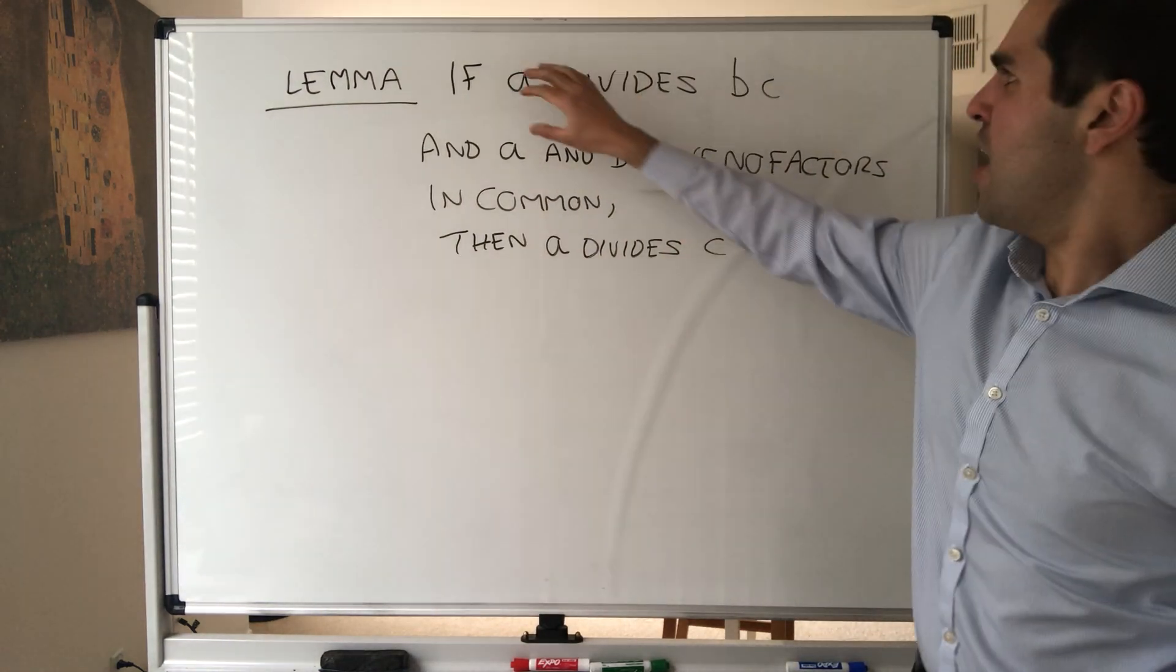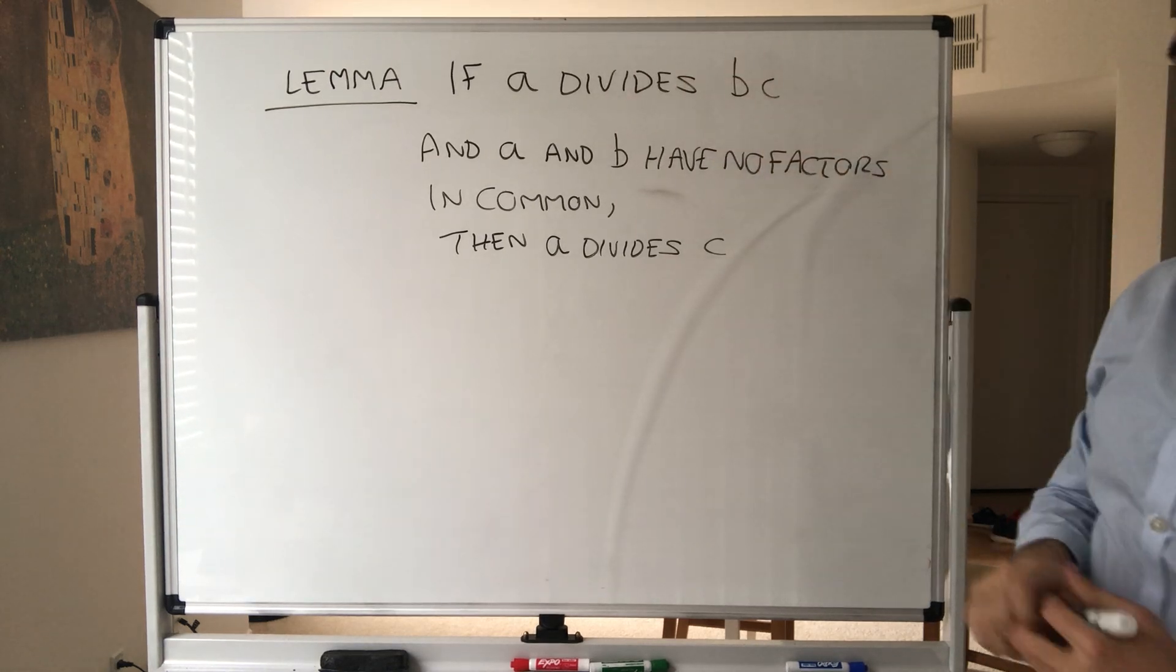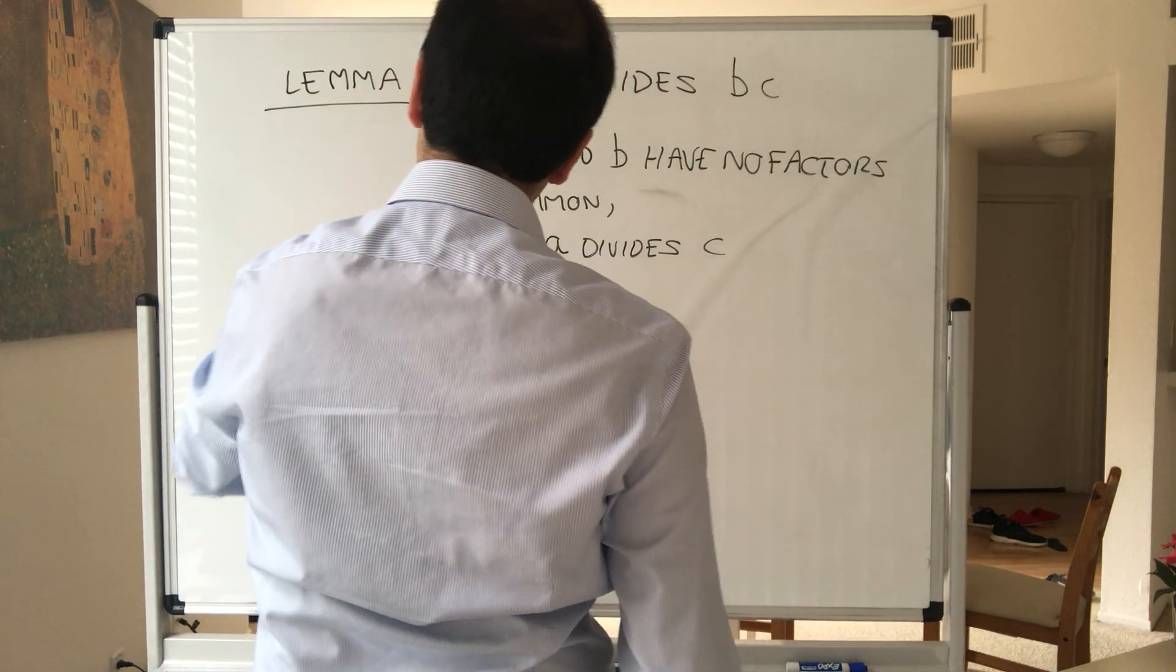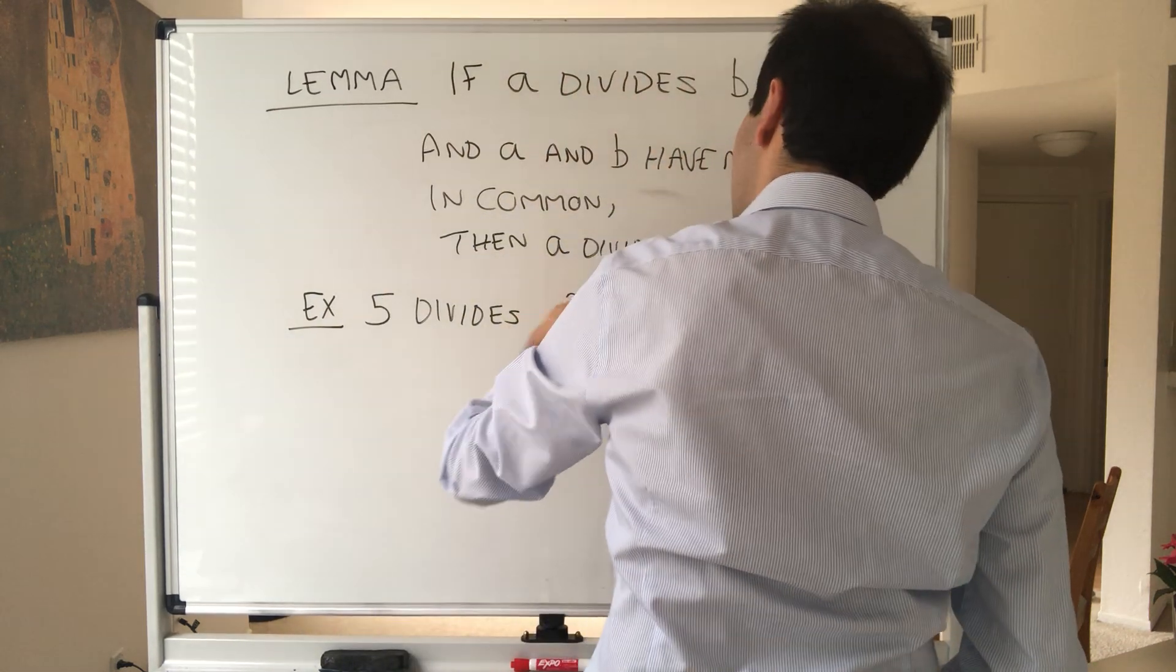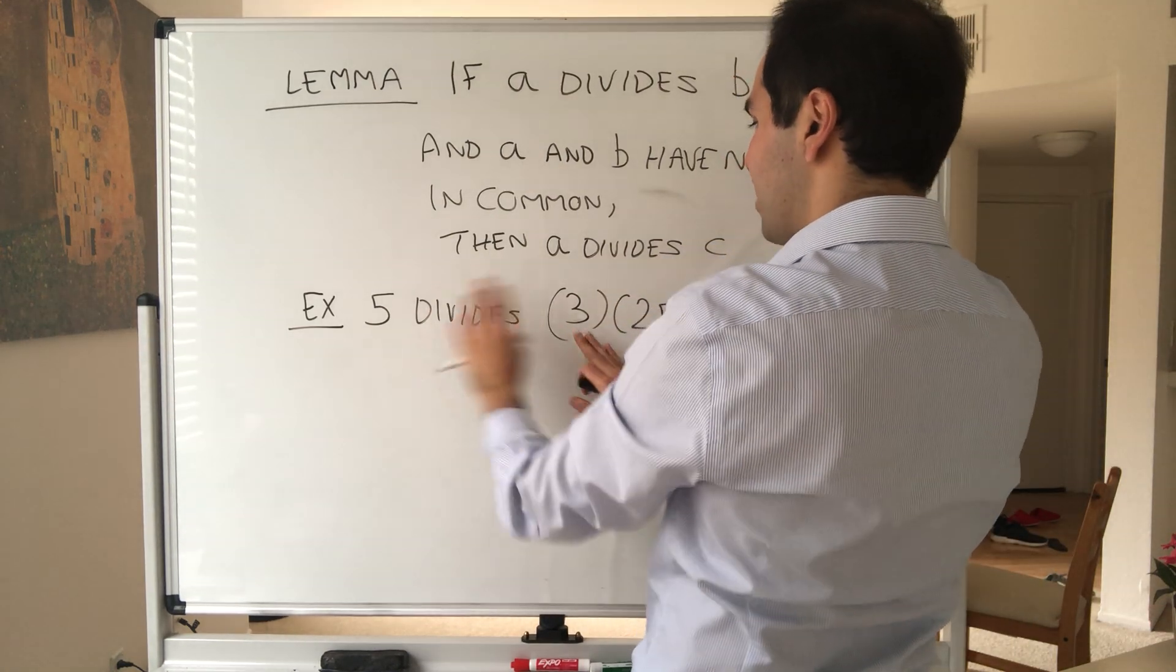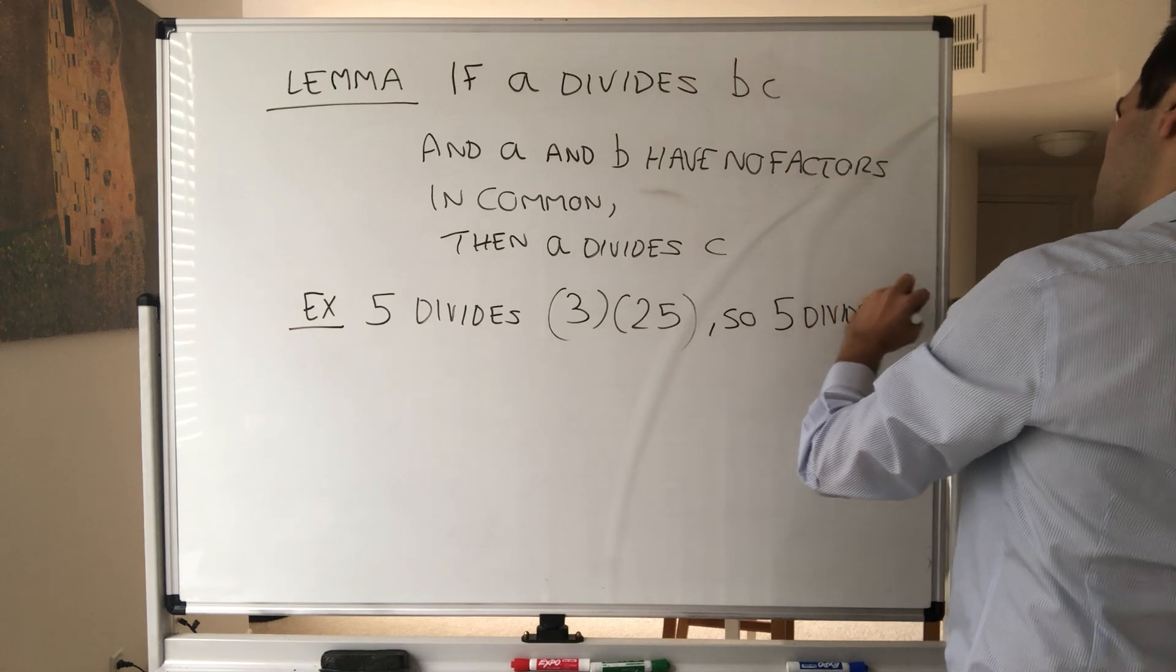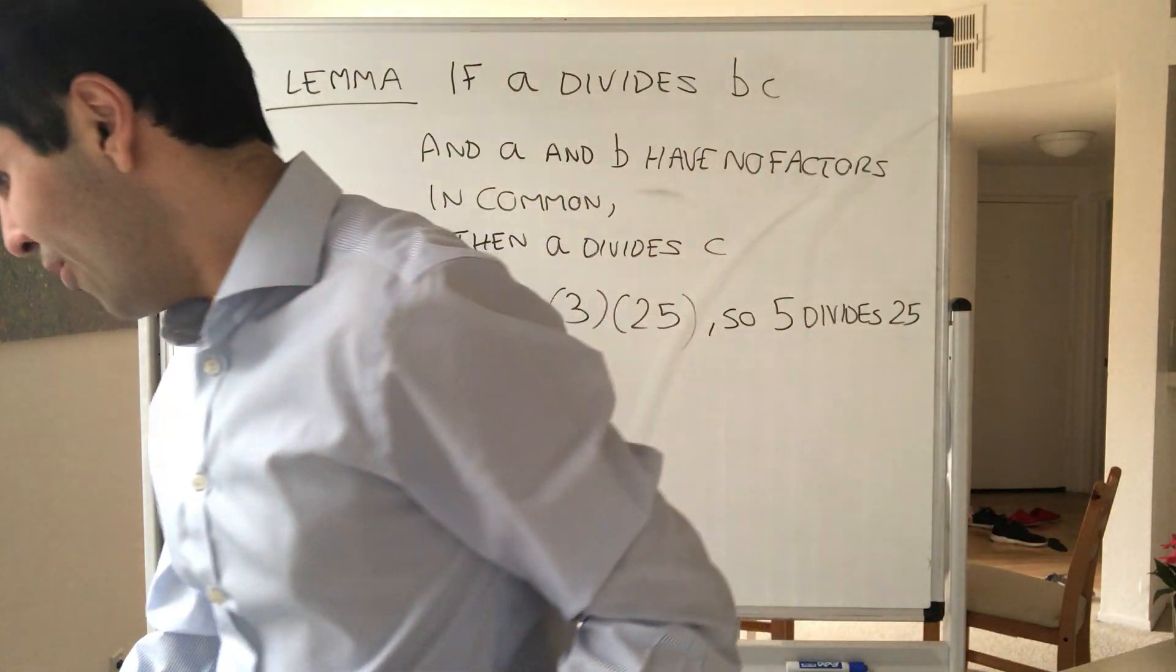In other words, if A divides that product and basically A and B are independent, then A has to divide that second number. For instance, we know 5 divides 3 times 25, but you see 5 and 3 have no factor in common, so in fact 5 divides 25.